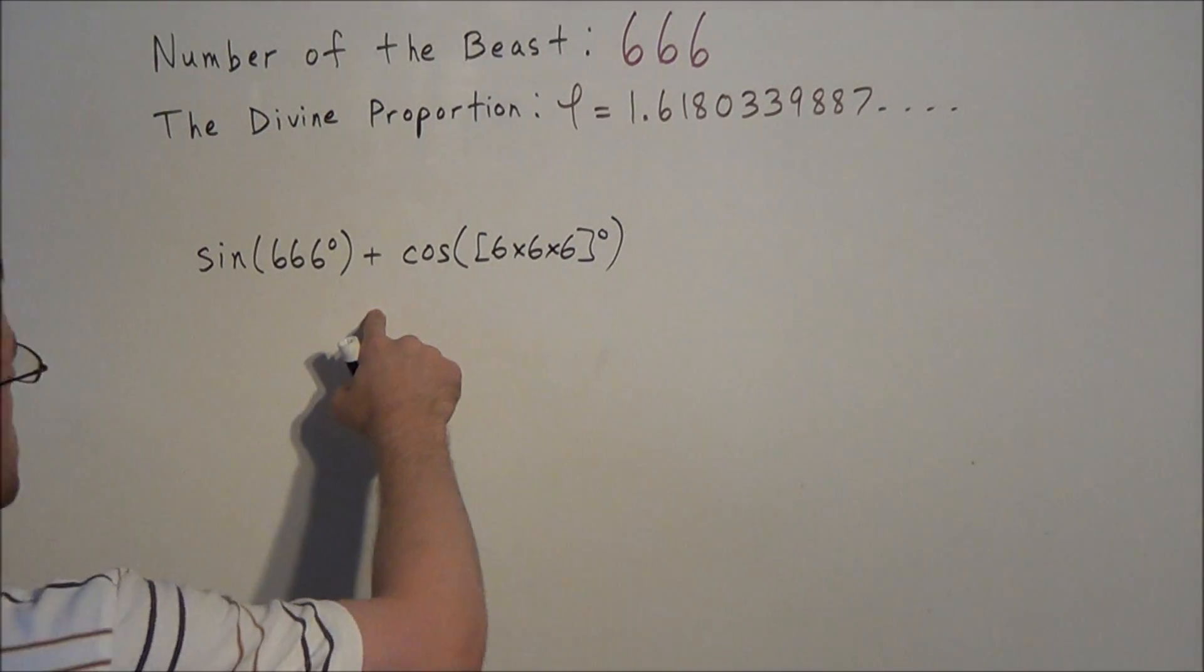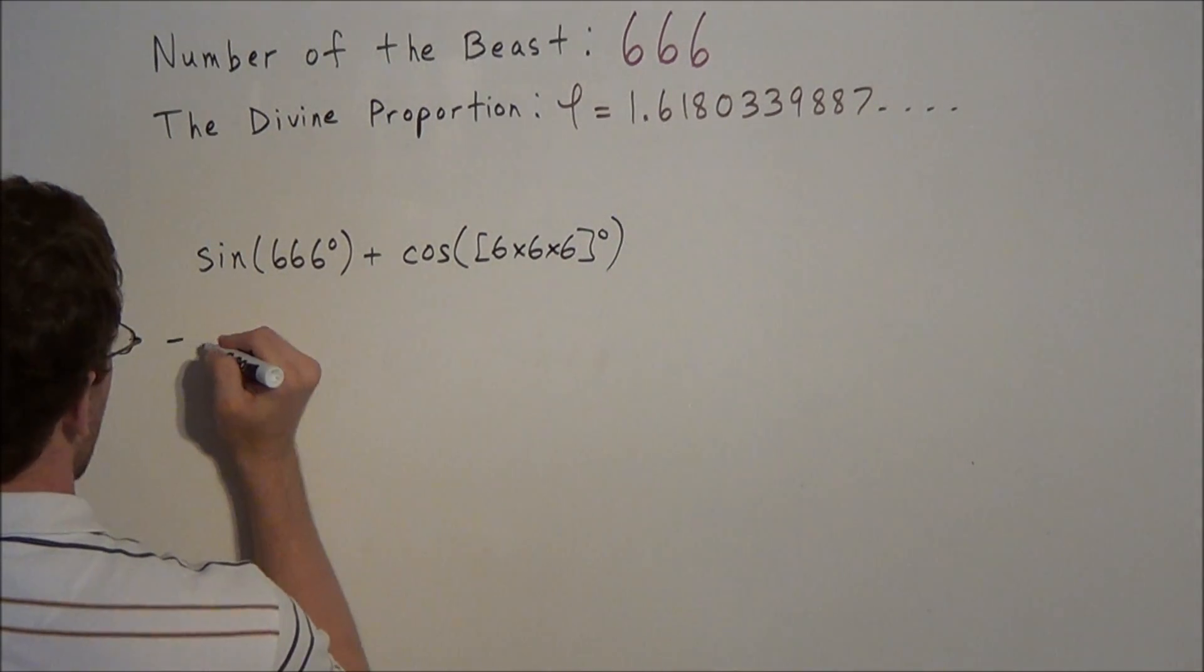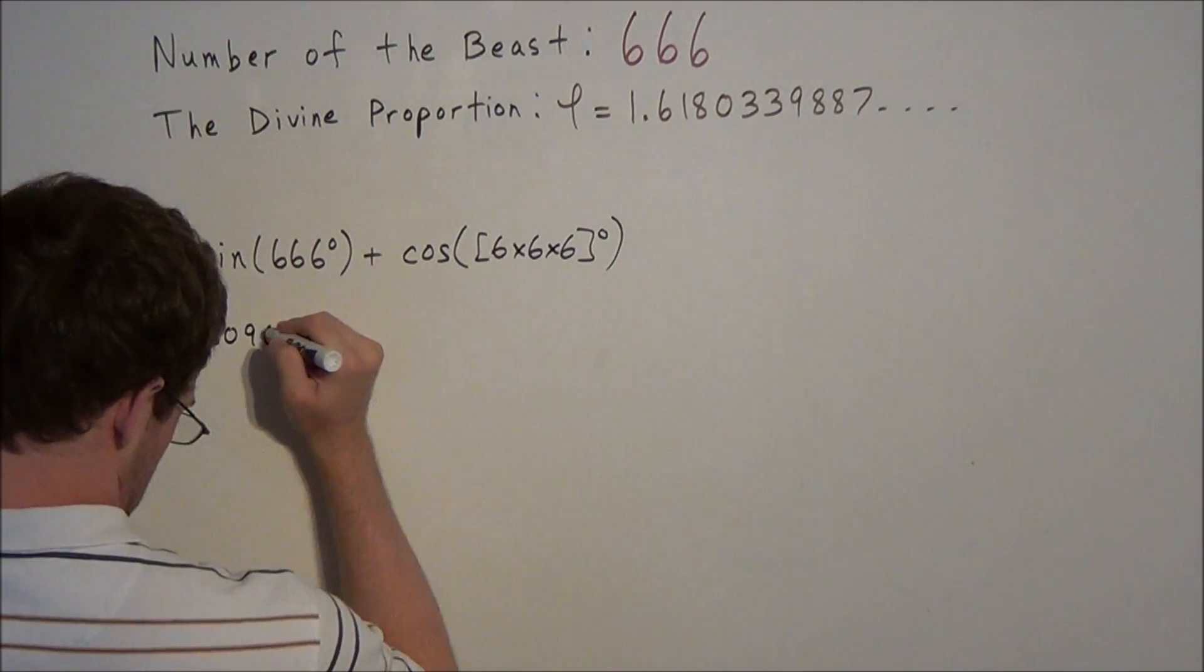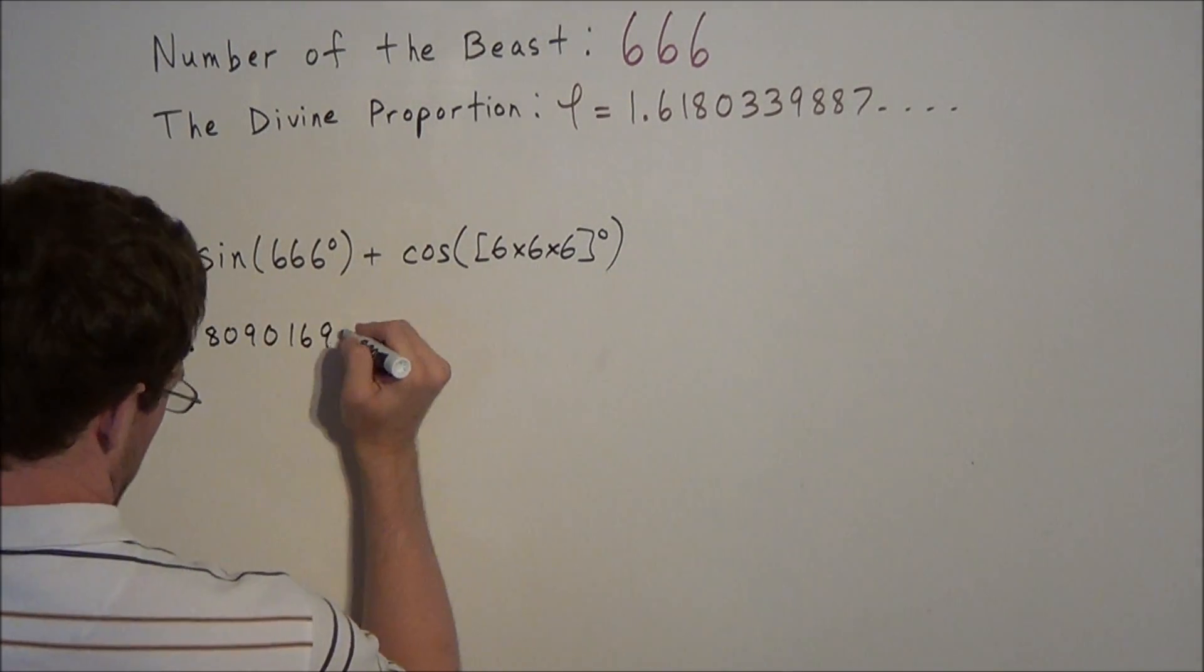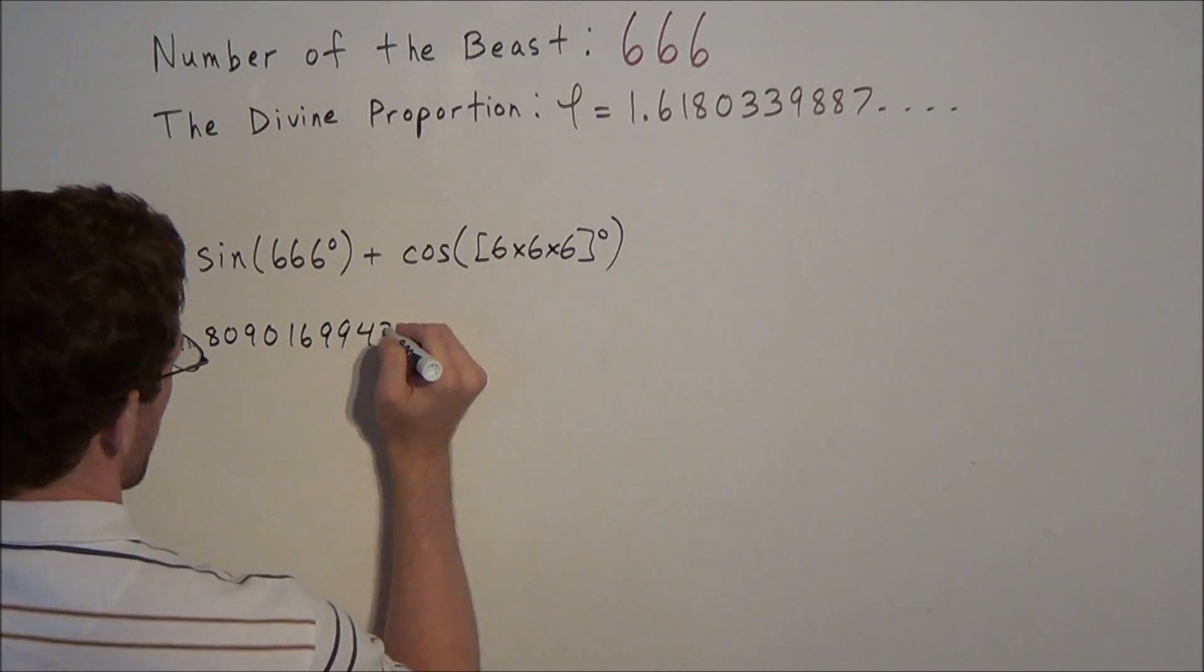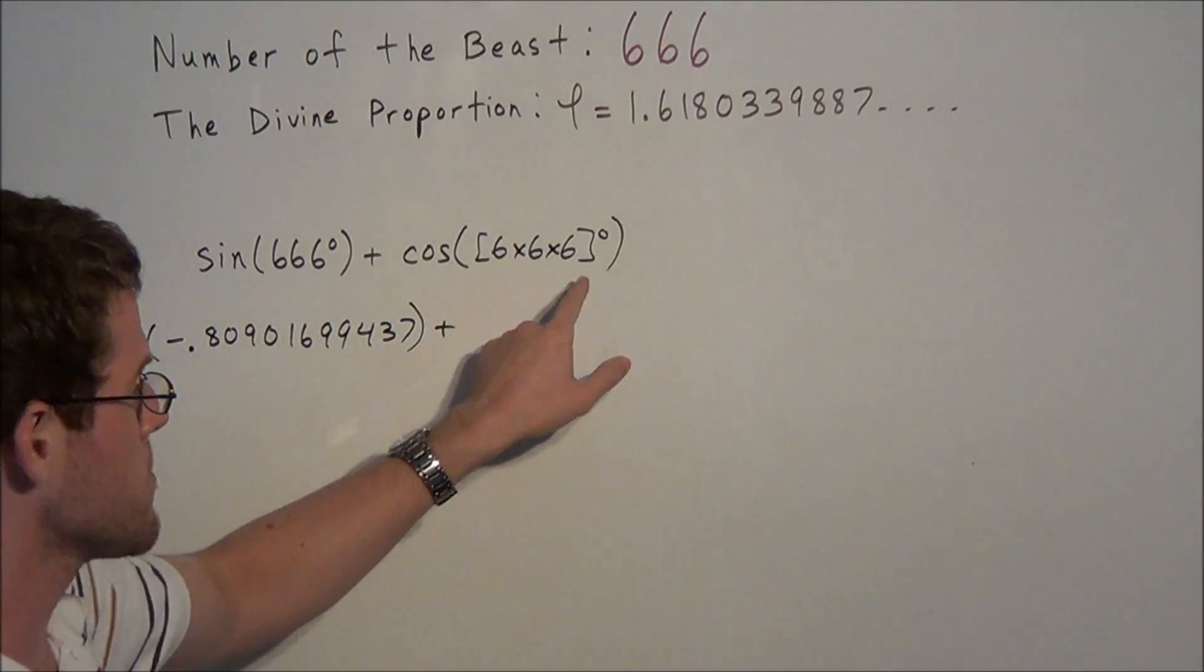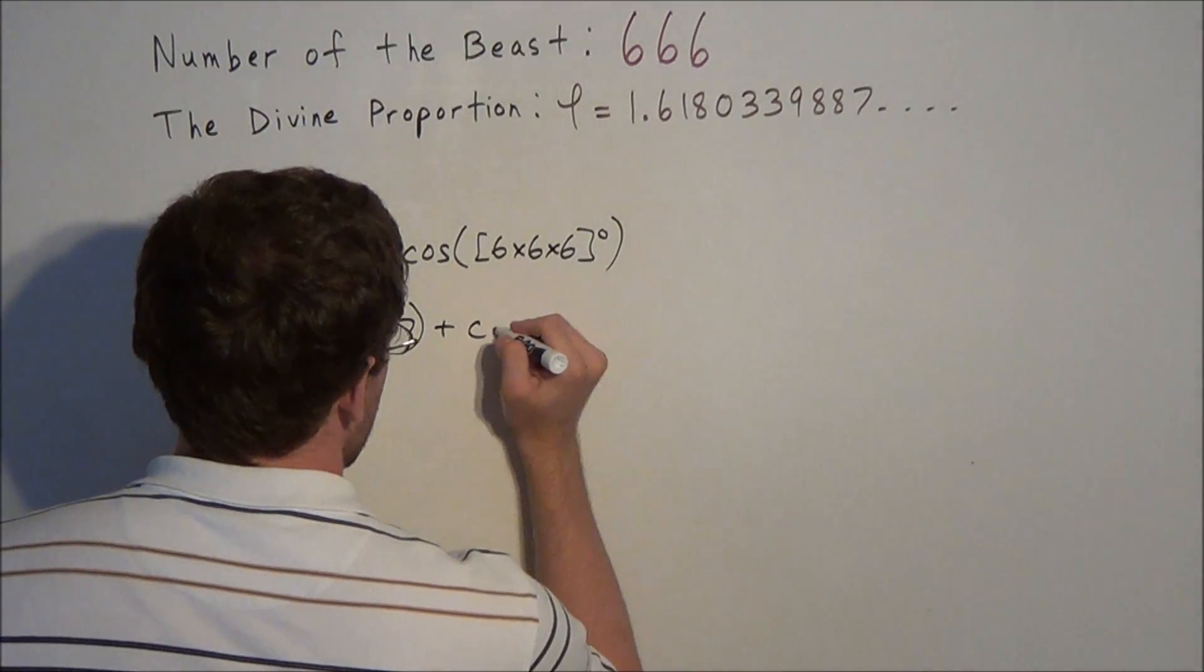The sine of 666 degrees is negative 0.80901699437. And also, the cosine of 6 times 6 times 6 degrees, if we simplify this, this is the cosine of 216 degrees.